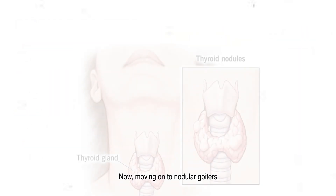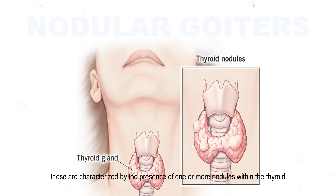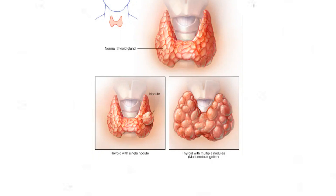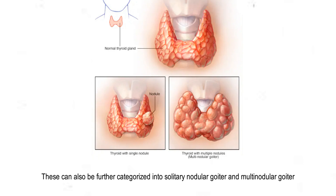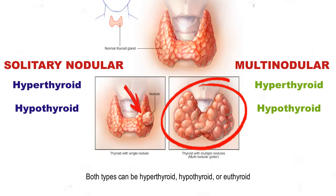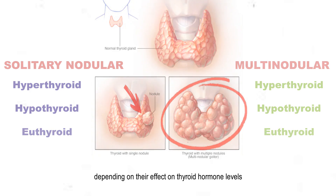Now moving on to nodular goiters. These are characterized by the presence of one or more nodules within the thyroid. These can also be further categorized into solitary nodular goiter and multinodular goiter. Both types can be hyperthyroid, hypothyroid, or euthyroid depending on their effect on thyroid hormone levels.